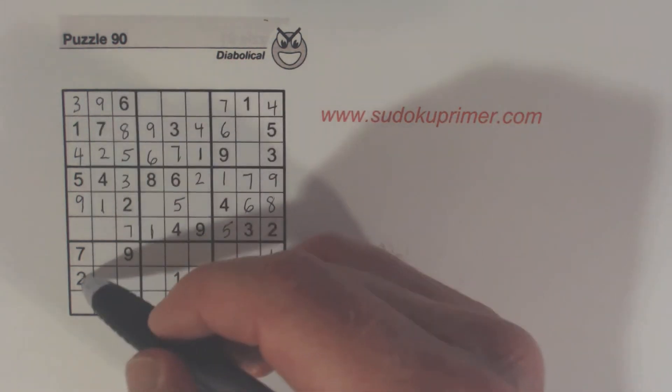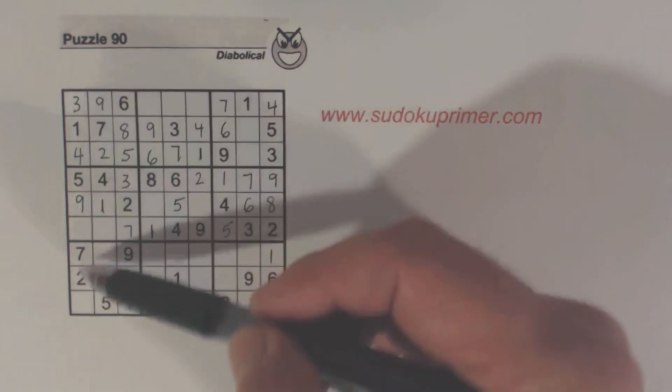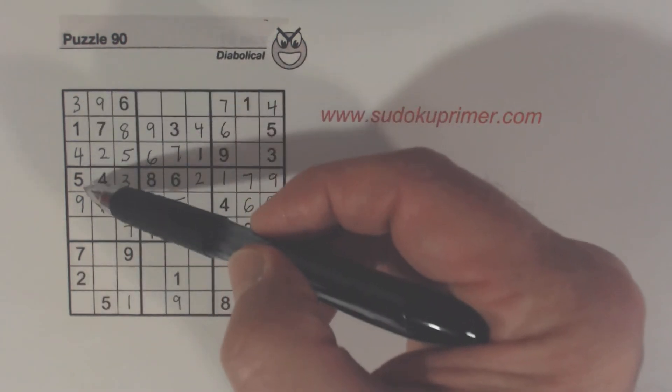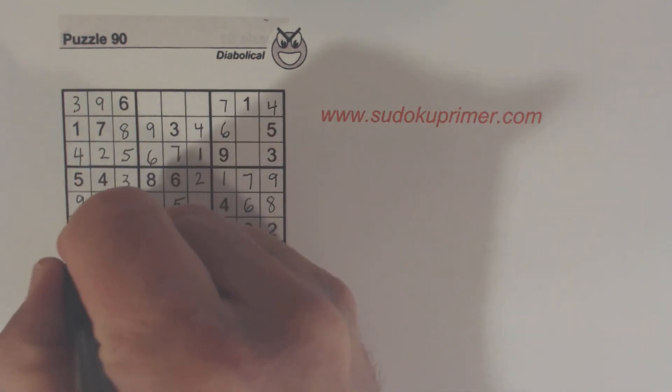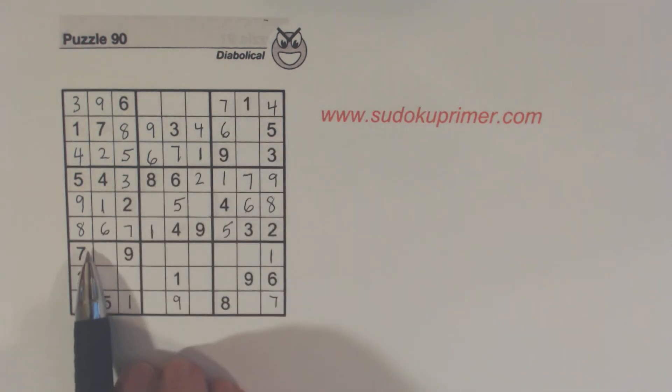Now we've got, in this column here, we're missing 6 and 8. We've got an 8 there. So we can solve those, and we're only missing a 6 in that box, in box 4 there.